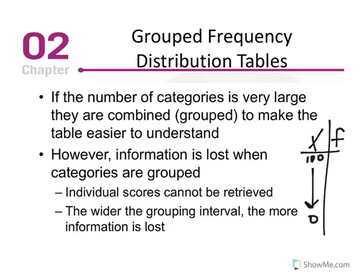The purpose of frequency distribution is to organize data and to summarize it. So if we have a large data set, it's not helpful to list every x value and its corresponding frequency. A solution is to construct a group frequency distribution, which helps us consolidate large data sets into a smaller table. The purpose of a group frequency distribution table is to consolidate large sets of data to make it easier to read.